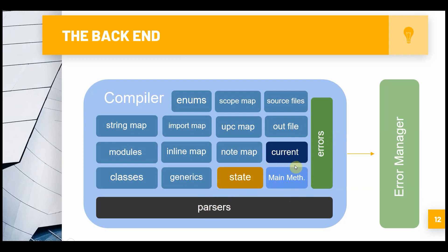After that, we have our main method - a pointer to our main method, because we need to have a main method in our programming language to start our program. And of course, there's state. Because I couldn't fit everything else in here, this represents just any other state variables we would like to track. There are dozens of state variables. When you have a compiler, you're probably going to have a ton of state variables - that's all that represents.